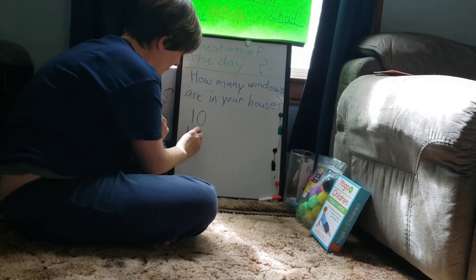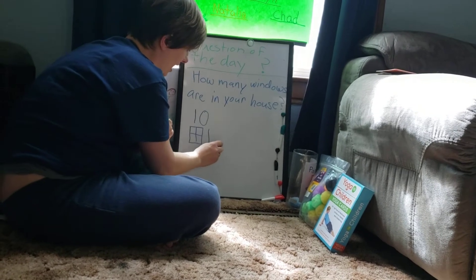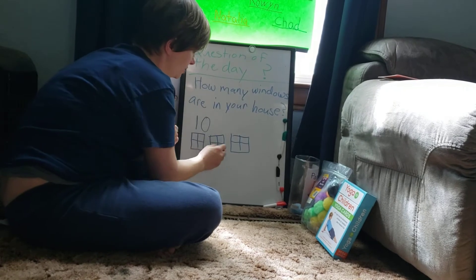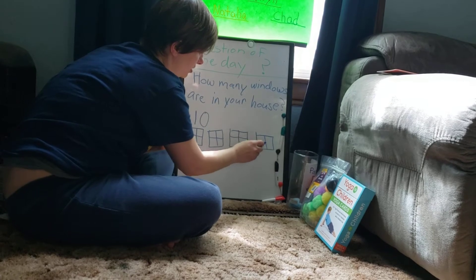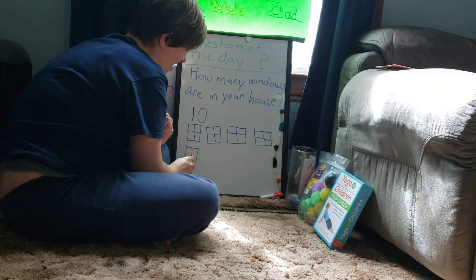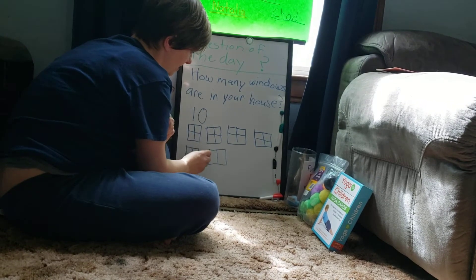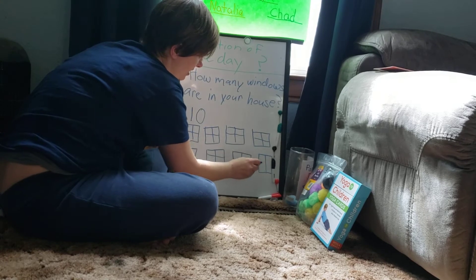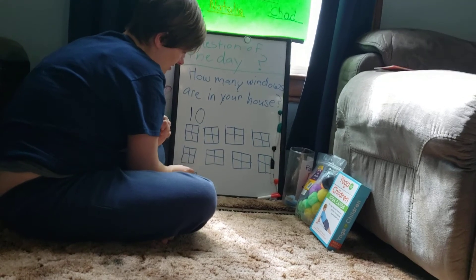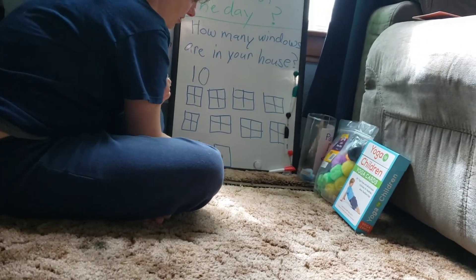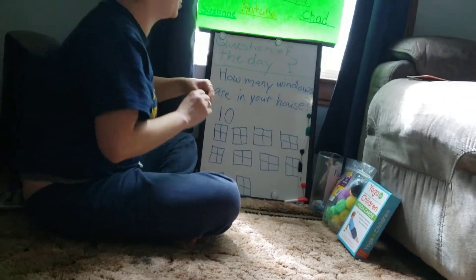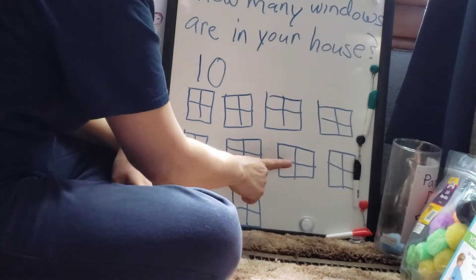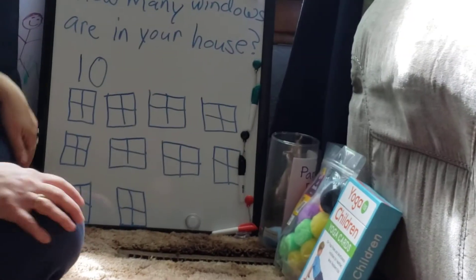I'm gonna draw them. This is how I draw windows. You can draw windows on a piece of paper for how many you have — that might even help you count them. One, two, three, four, five, six, seven, eight, nine, ten. Now let's count them together just to make sure Miss Suzanne drew enough windows. One, two, three, four, five, six, seven, eight, nine, ten. That's how many windows are in my house.